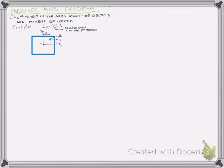As already defined, if you want the second moment of the area about the x-axis, then you take dA times y squared and integrate that. And if you want the second moment of the area about the y-axis, then you take dA times x squared and integrate that.